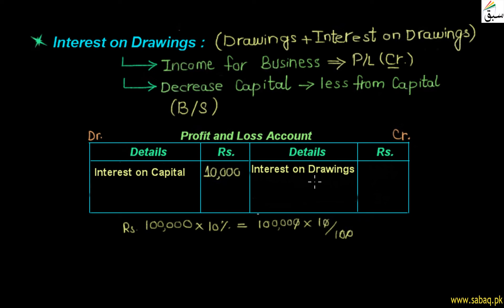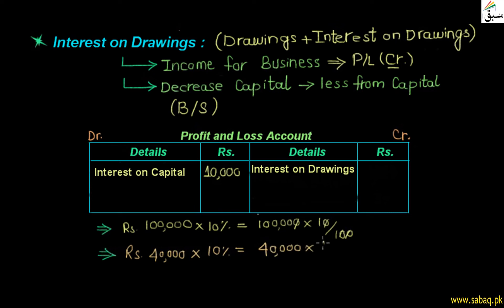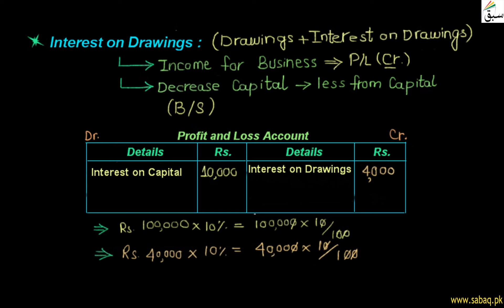Now for interest on drawings: the owners have withdrawn 40,000 rupees from the business. We calculate 10% interest on 40,000: 40,000 multiplied by 10 divided by 100 equals 4,000 rupees. This 4,000 rupees is interest on drawings, which is business income, so we write it on the credit side of the profit and loss account.